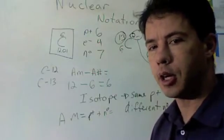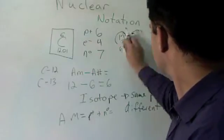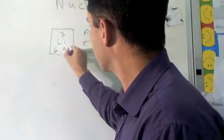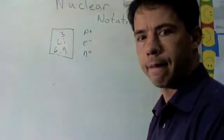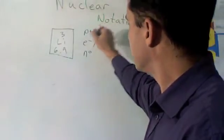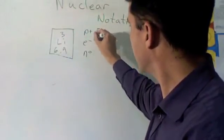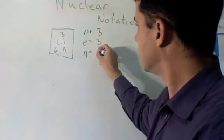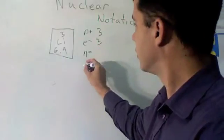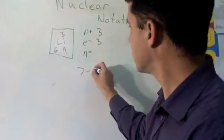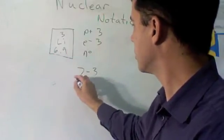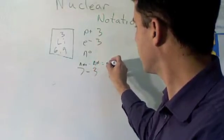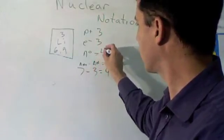So let's practice a couple. Let's do lithium, which is 3 and 6.9. So, protons is how many? 3. Electrons is how many? 3. Neutrons. Be careful. We round this to 7, right? 7 minus 3. Atomic mass minus atomic number equals neutrons, which equals 4. 4 neutrons.